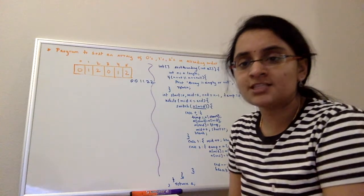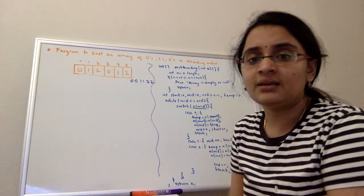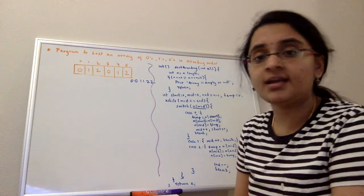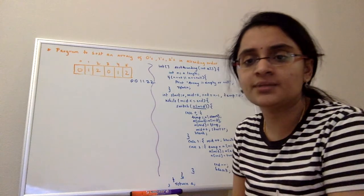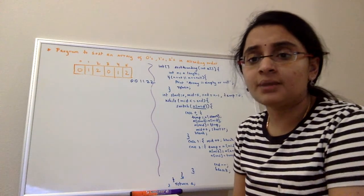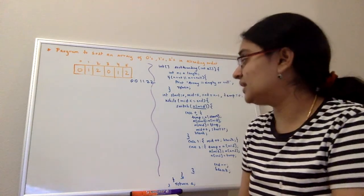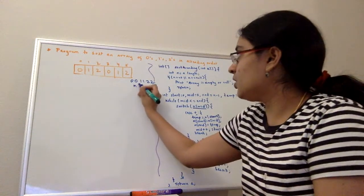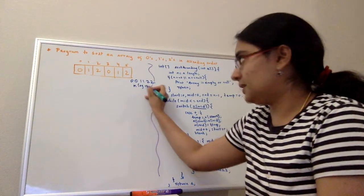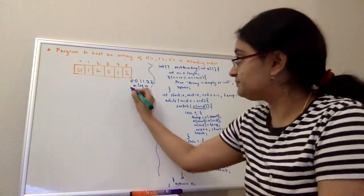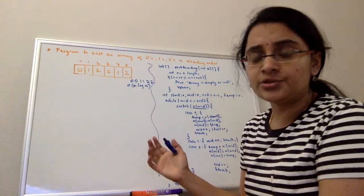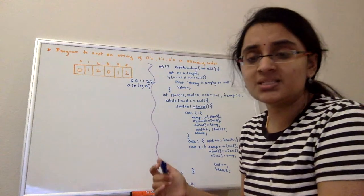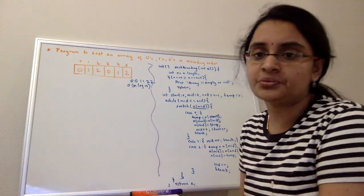The first solution that comes to mind when it is sorting in ascending order is to use any sorting algorithm like the best one, quick sort. But quick sort takes O(n log n) time complexity. This is a good solution too, but can we do this in a better way or in an efficient way?